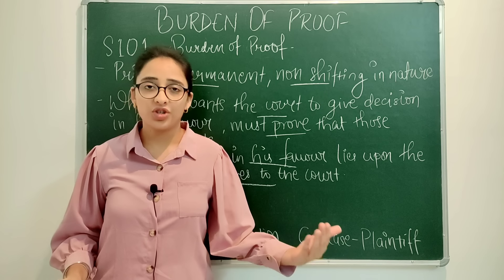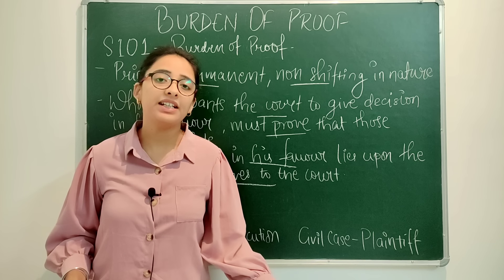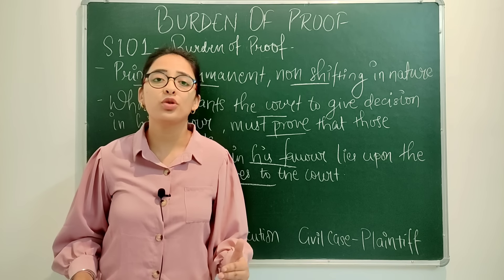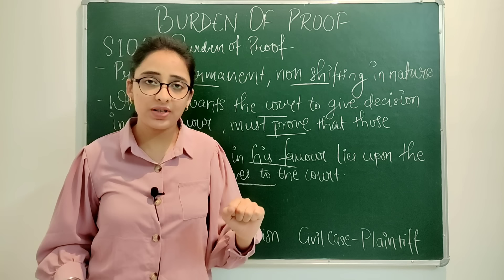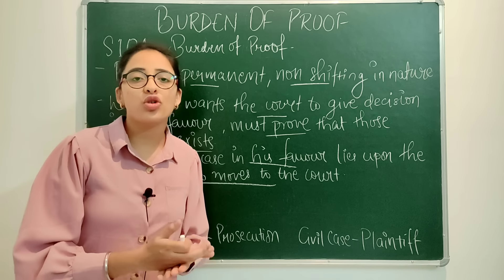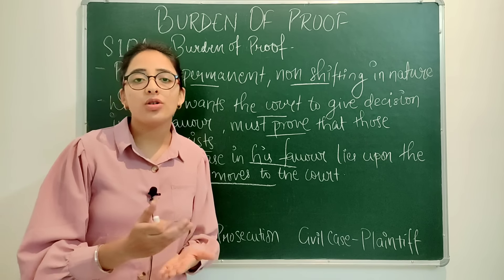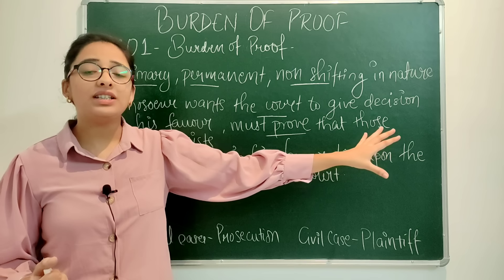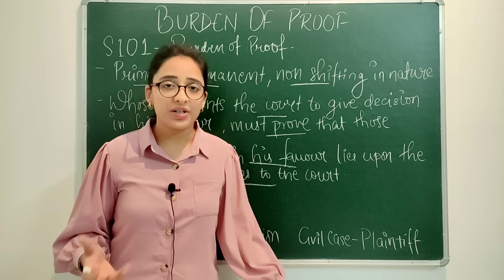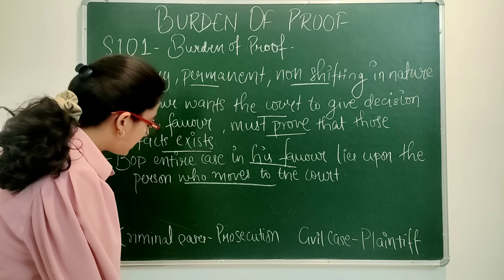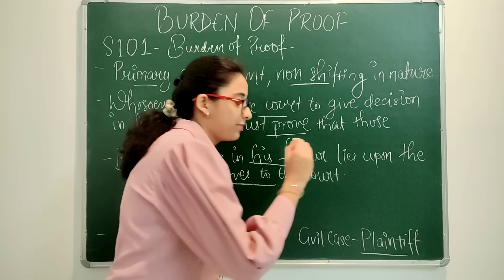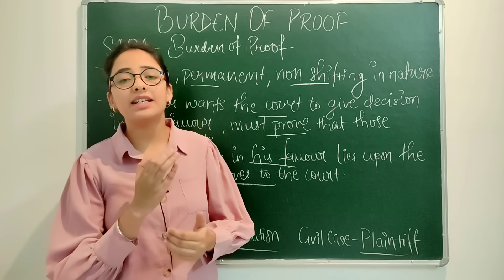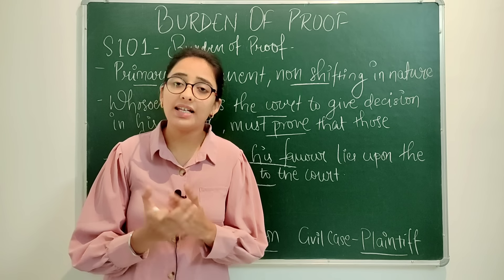It is simple — if going in front of the court, the initial burden of proof and the permanent and primary burden of proof will lie upon that person. At the end of the trial, he must prove his legal right and the liability of the other party. In criminal cases, this is on the prosecution, and in civil cases, this is on the plaintiff. The permanent burden of proof does not shift.